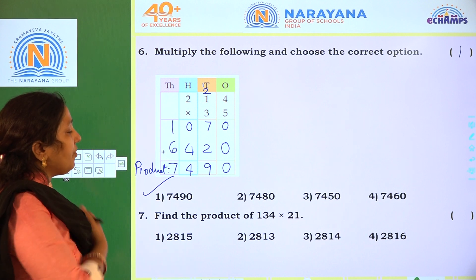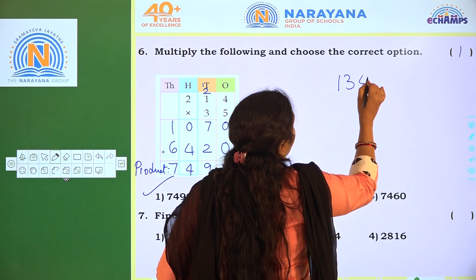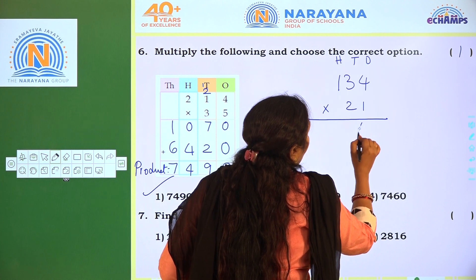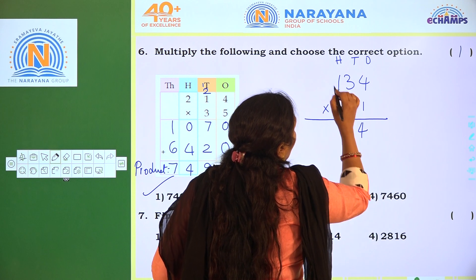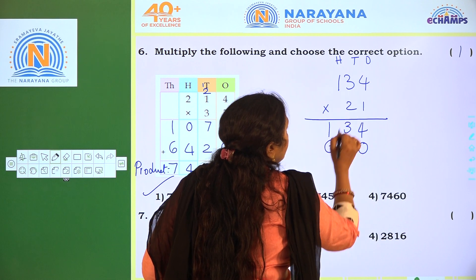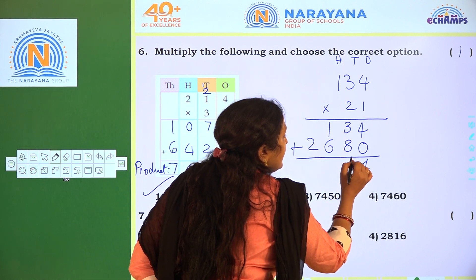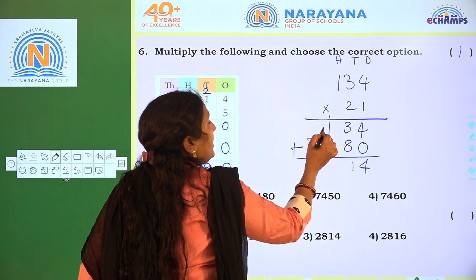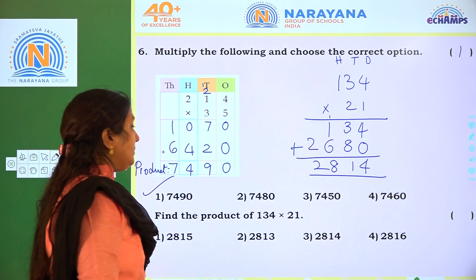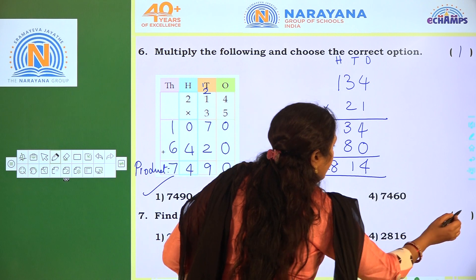Next: find the product of 134 into 21. Multiply 1 into 4 is 4, 1 into 3 is 3, 1 into 1 is 1. Then 1's place should be 0. 2 4's are 8, 2 3's are 6, 2 1's are 2. Add: 4 plus 0 is 4, 3 plus 8 is 11 — write 1, 1 regrouping. 1 plus 1 is 2, 2 plus 6 is 8, and 2. The answer is 2,814. The correct option is option 3.